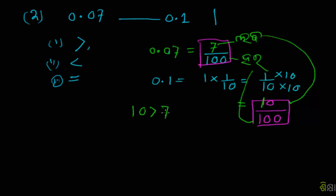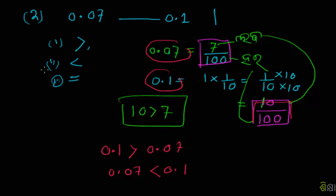Ten is greater than seven. So 0.1 is greater than 0.07, but 0.07 is less than 0.1. So this is the answer.